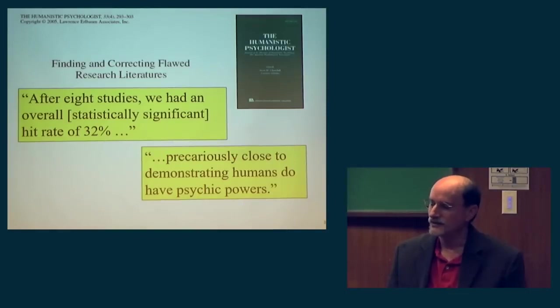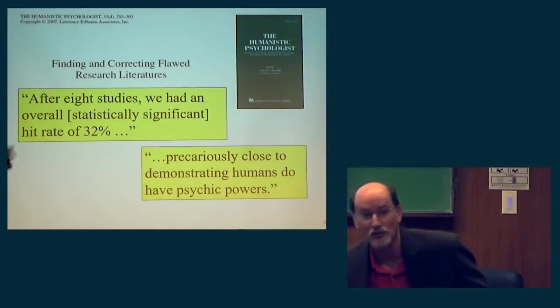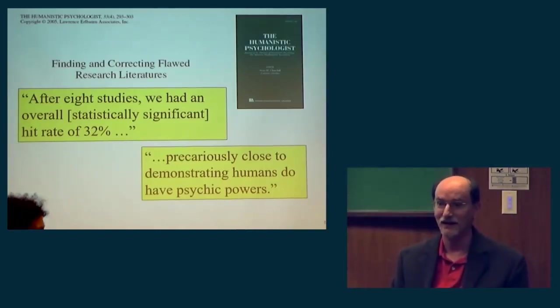But because of their initial position, they added that this was precariously close to demonstrating humans do have psychic powers, and so we don't even believe our own results. This is a good entree into Bayesian statistics. What I showed before is frequentist statistics. Bayesian statistics takes into account the a priori bias of the analyst. These people are biased to the point where they might think the probability that telepathy exists is like 10 to the minus 20th.